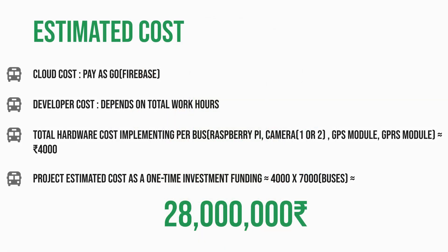The estimated cost for our product: the cloud cost is pay-as-you-go and can vary; the developer cost depends on the total amount of work each developer is doing; and the hardware cost is 4000 rupees, which includes a Raspberry Pi, camera, GPRS module, and GPS module. This is the estimated cost if you are operating 7000 buses.